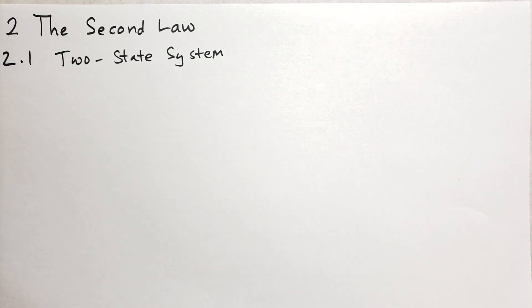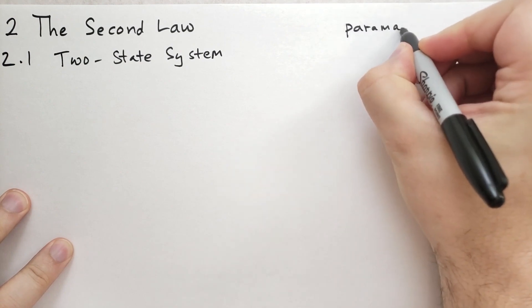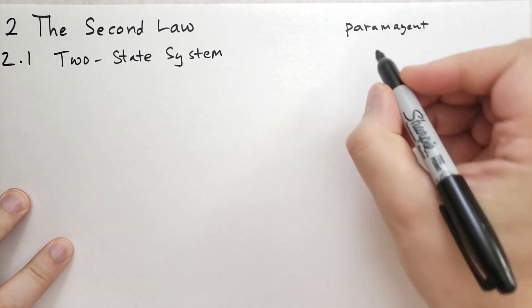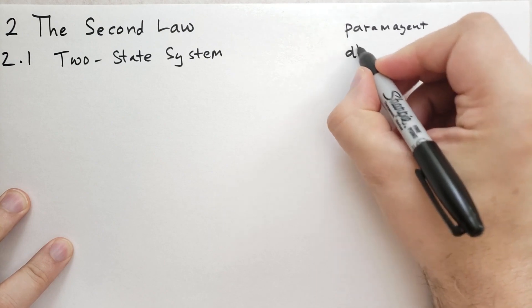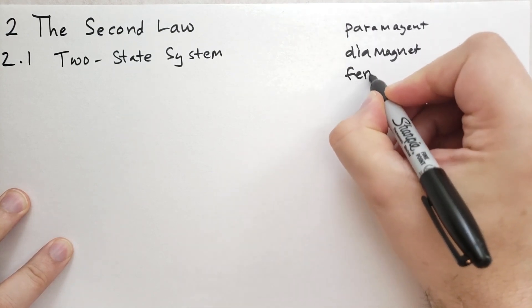So let's talk about this two-state system, this two-state paramagnet. So in the two-state paramagnet, we have to go down to a quantum mechanic level. So just remind yourself really quickly here, paramagnet, there is three kinds of magnets that you'll find in practice. There's a paramagnet, there's a diamagnet, and there is of course a ferromagnet.